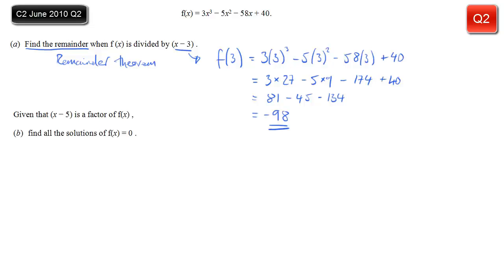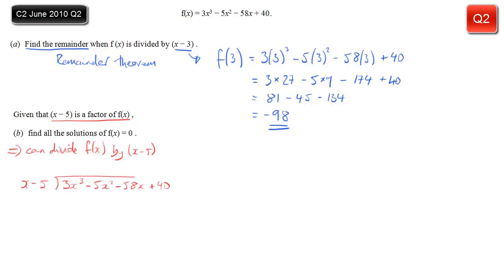Now the next bit: we're given that x minus 5 is a factor of f(x), and we want to find the solutions of f(x) equals 0. The fact that this is a factor means we can divide f(x) by x minus 5. So we set this out in the standard way. Start with: how many times does x go into 3x cubed? The answer is 3x squared, which we write in the x squared column, and then we multiply that back down by x first and then by minus 5, to get minus 15x squared.